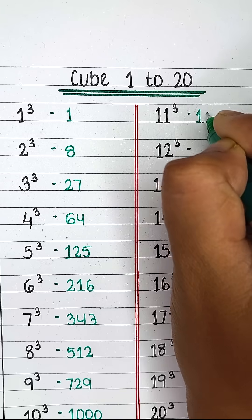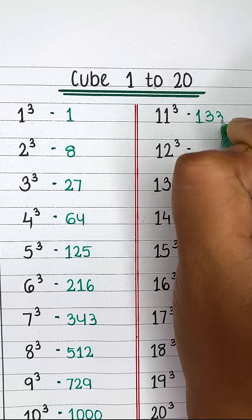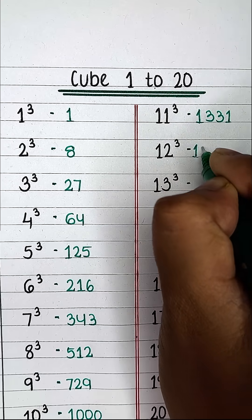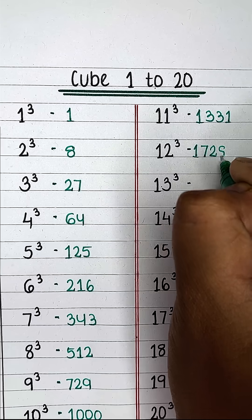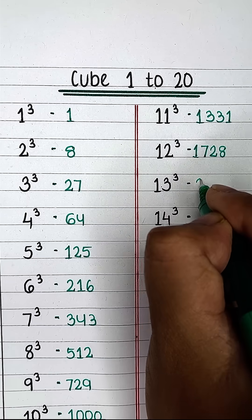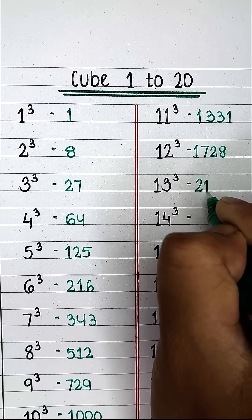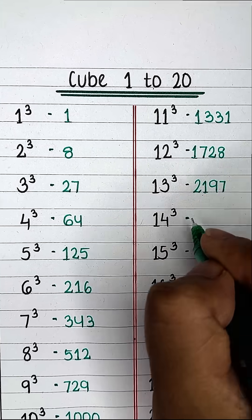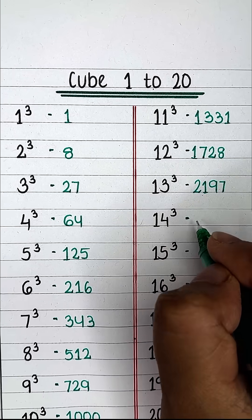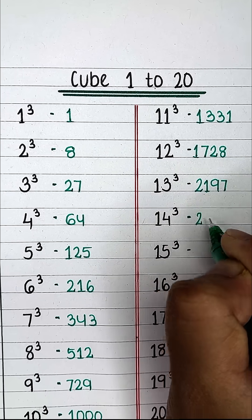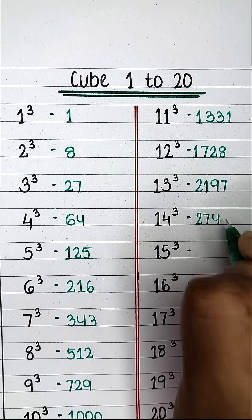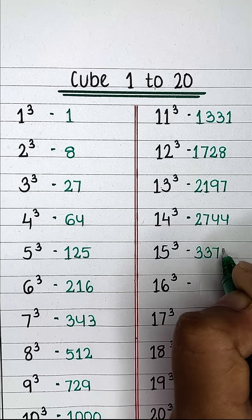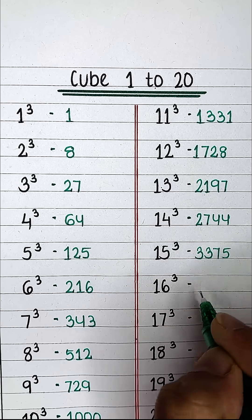Cube of 11 is 1331. Cube of 12 is 1728. Cube of 13 is 2197. Cube of 14 is 2744.